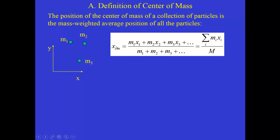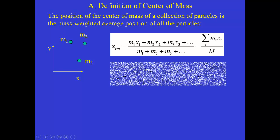We add those up and then divide by the sum of the masses. If you look at the dimensions, you'll get a position because the mass units cancel out. But that position will be weighted by how large those masses are. If mass three is much larger than the other two, then the x-coordinate of the center of mass will be fairly close to mass three. We can symbolically write this x-coordinate using summation notation, using capital M to indicate the total mass of the entire system.